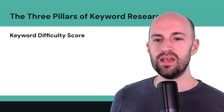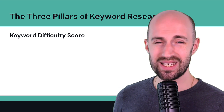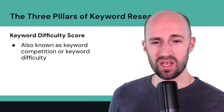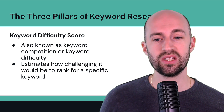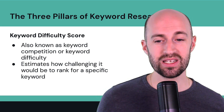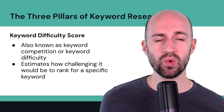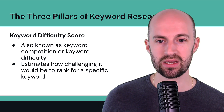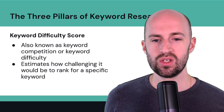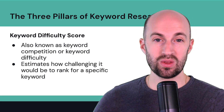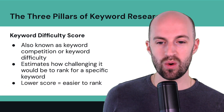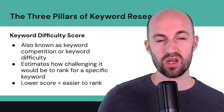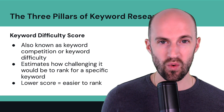The third pillar is keyword difficulty score, also known as keyword competition. This estimates how challenging it would be to rank for a specific keyword. Different tools measure this differently, but it appears as a score in most keyword research tools. You want to target keywords with the lowest difficulty score possible, as a lower score means it's much easier to rank on page one or in the top three results.